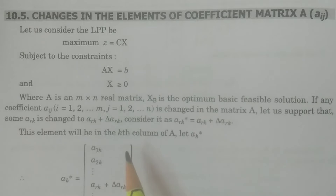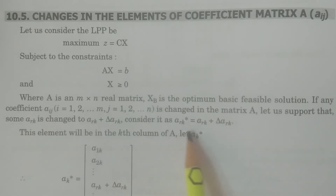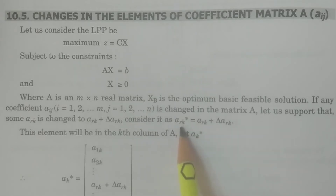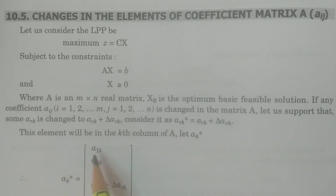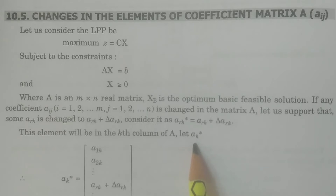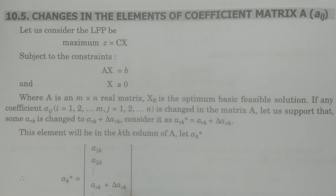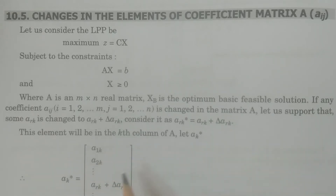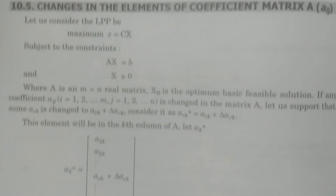So ark-star equals ark plus delta-ark, where ark-star is the new changed value. The element will be in the kth column of A, and let it be ak-star. The column vector ak-star is: a1k, a2k, ..., (ark plus delta-ark), ..., amk. These are the usual values of aij; the kth column vector has the variation ark plus delta-ark in the rth position.